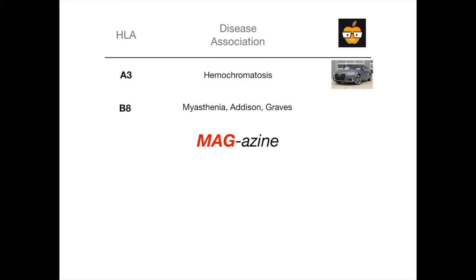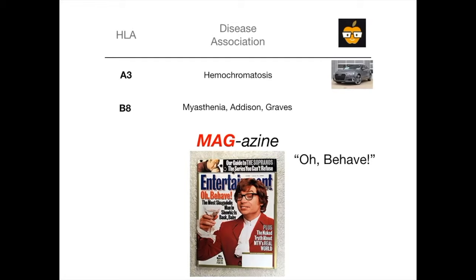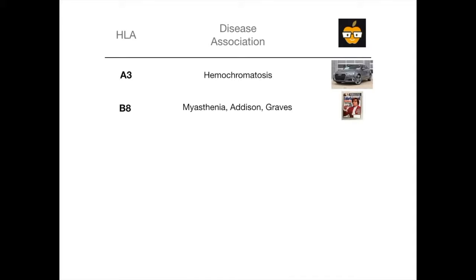Did you ever see the movie Austin Powers? If you haven't, this mnemonic won't make sense — you should go watch it because it's one of the funniest movies of all time. Austin Powers had this saying where he would go, 'Oh, behave.' So here's an Austin Powers magazine where on the cover he's saying 'Oh, behave.' But instead of saying 'Oh, behave,' I want you to say 'Oh, B8' — B8 for HLA B8. Austin Powers will tell you: oh, B-A, and MAG-A-ZINE — MAG for myasthenia, Addison, and Graves. Audi A3 in the iron color: hemochromatosis. Oh B8 on the magazine: MAG — myasthenia, Addison, Graves. You've already got two free points and you already know like a quarter of the chart.